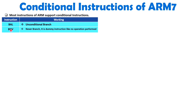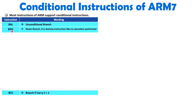If you write BNV, that means never branch. This is a dummy instruction — it is like NOP in 8085. We are not performing any operation with BNV; it means never branch, so that is a dummy instruction.